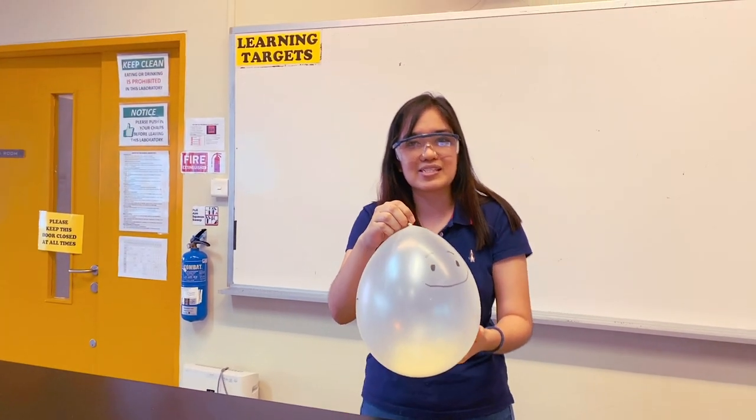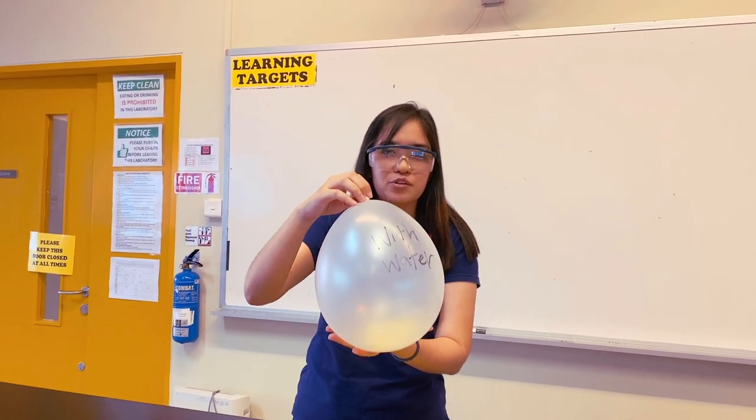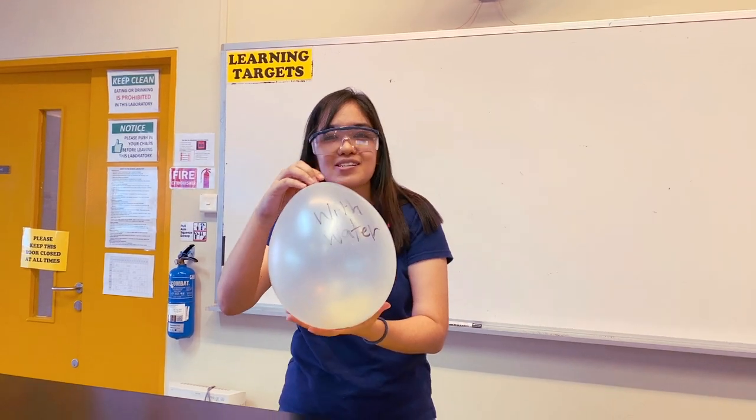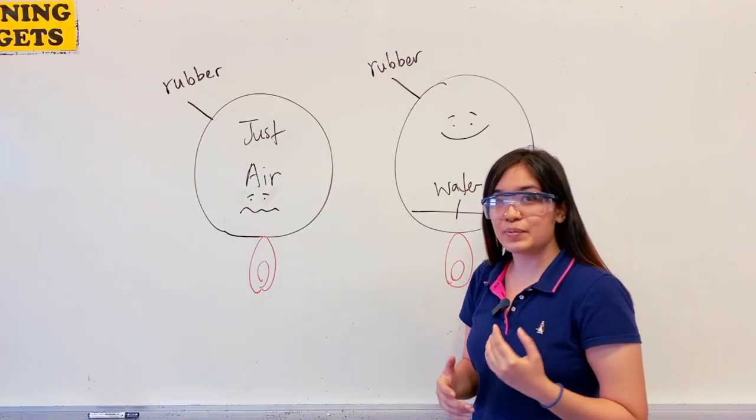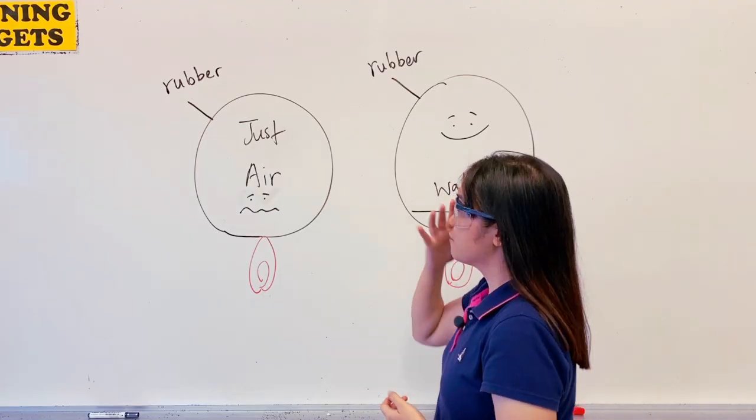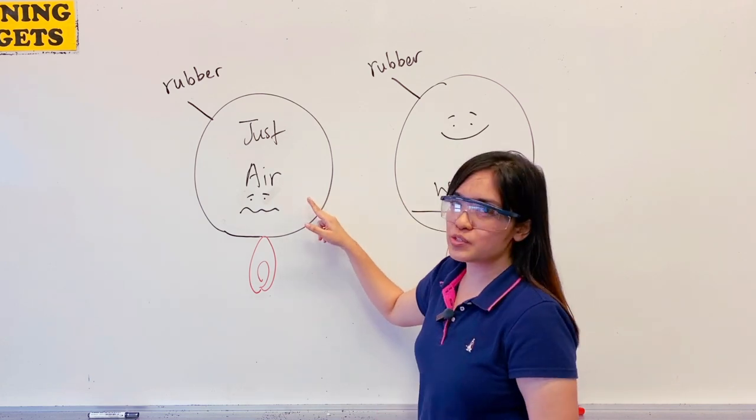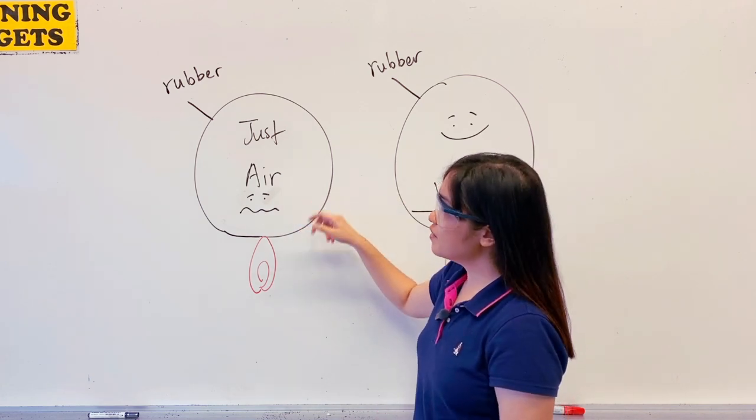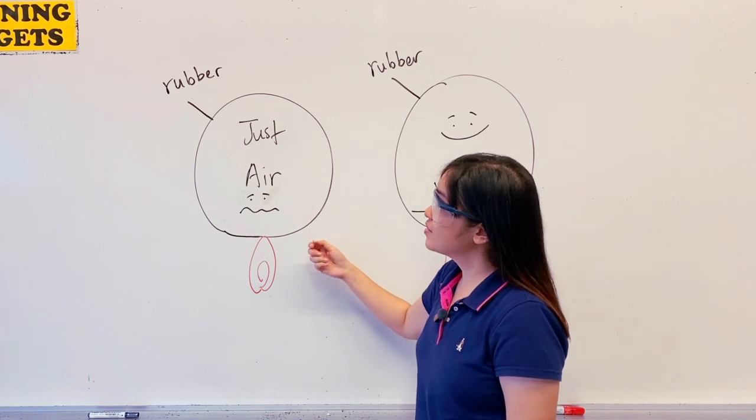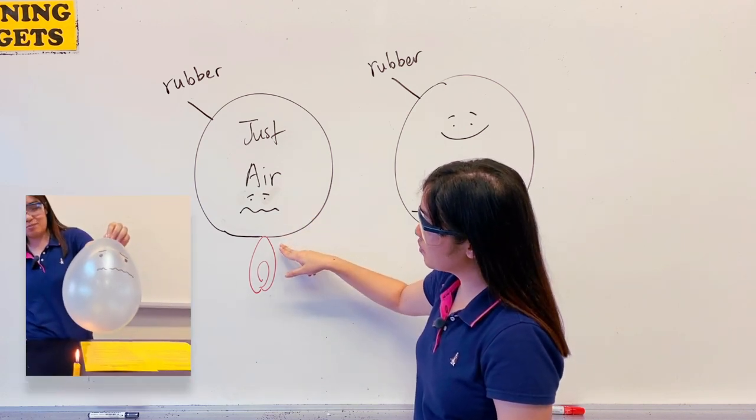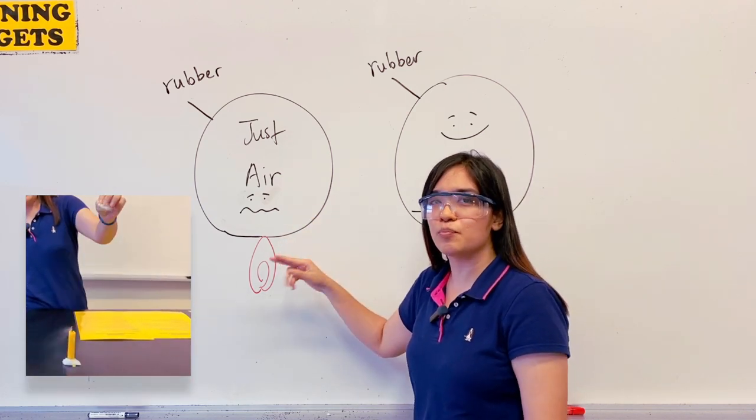So why do you think this is? Our balloon friend with water had a better survival chance. Let's explain what we just observed. The first balloon exploded because it was only filled with air. Air is very bad at collecting heat and so the rubber got too hot, melted and popped.